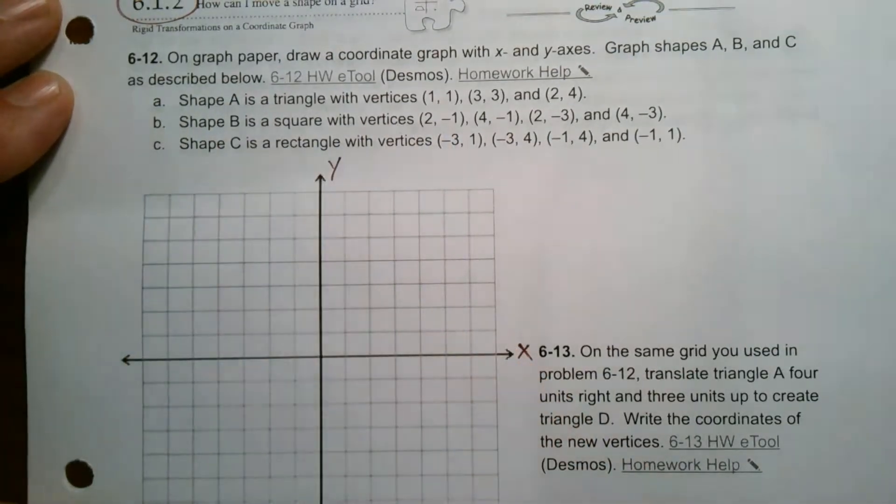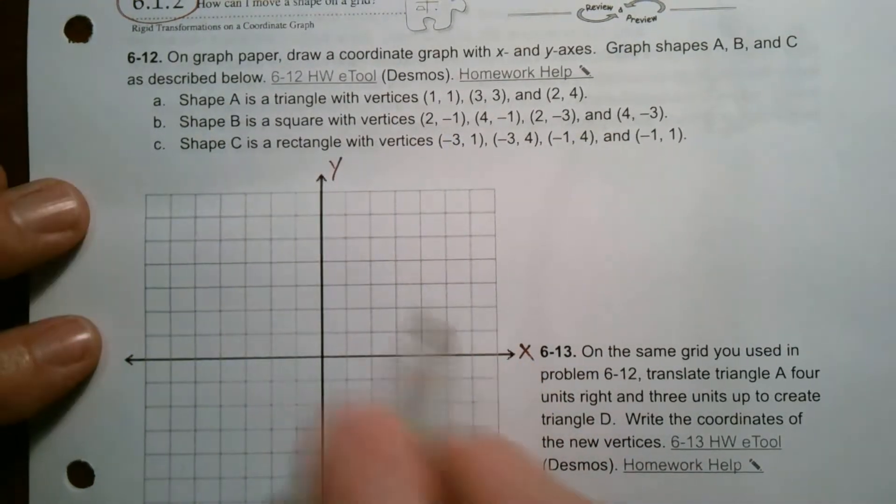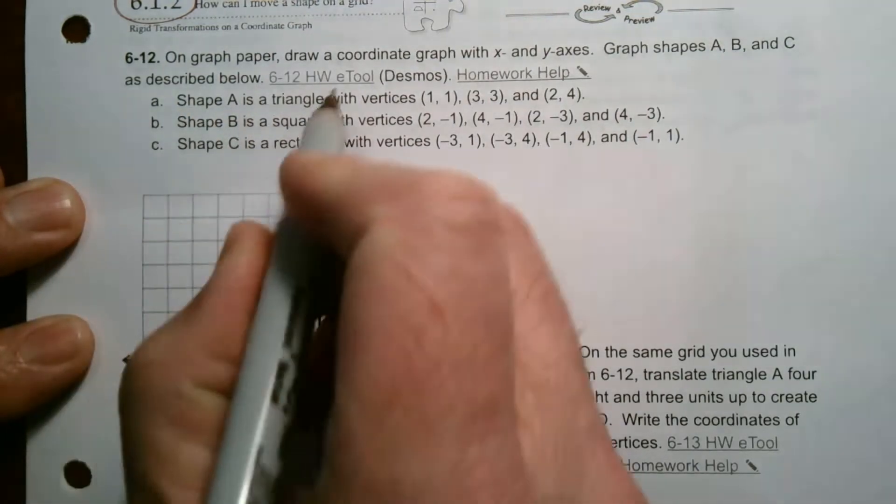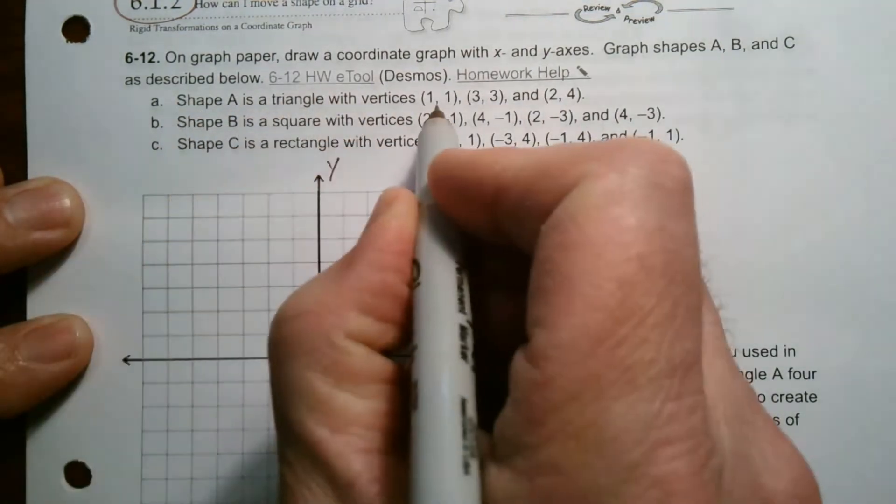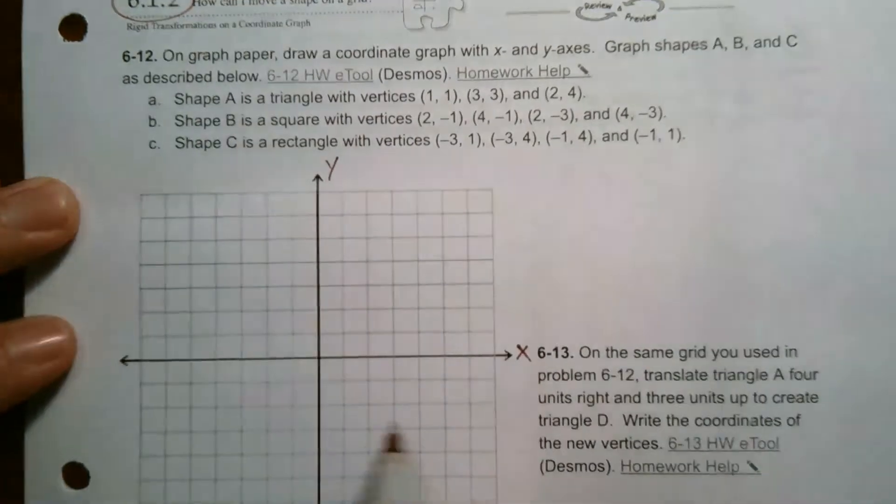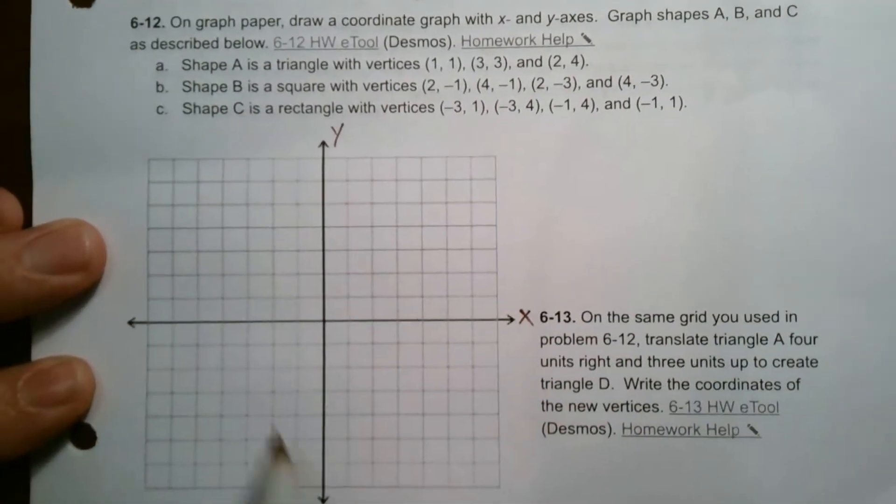So here's my shapes. So I'm going to graph A. How do I graph this shape? Well, first of all, it says it's a triangle, and these are the vertices. So remember on an x and y plane, right?